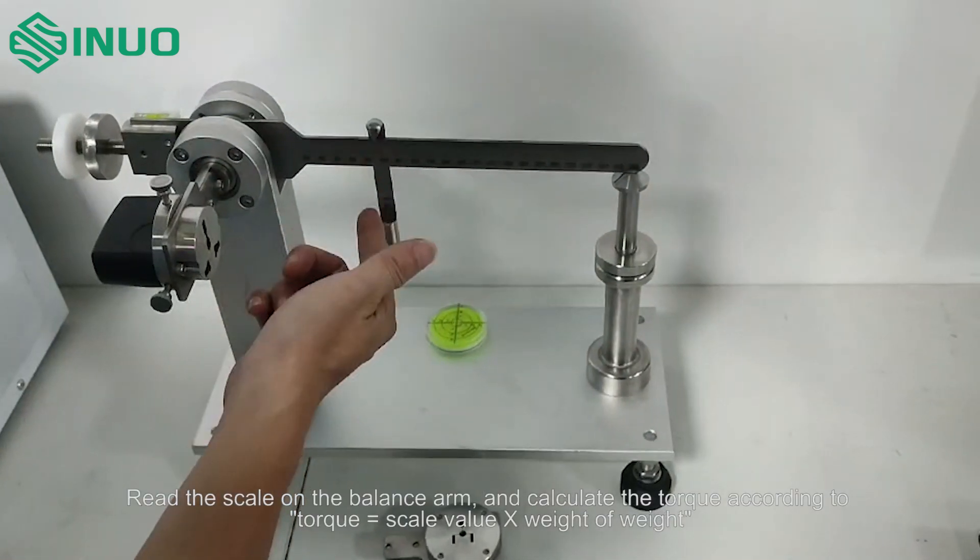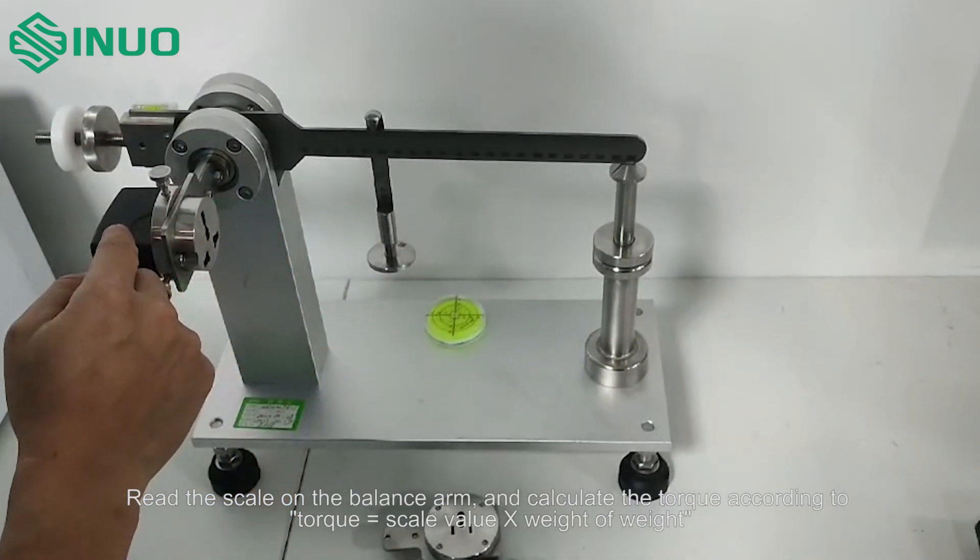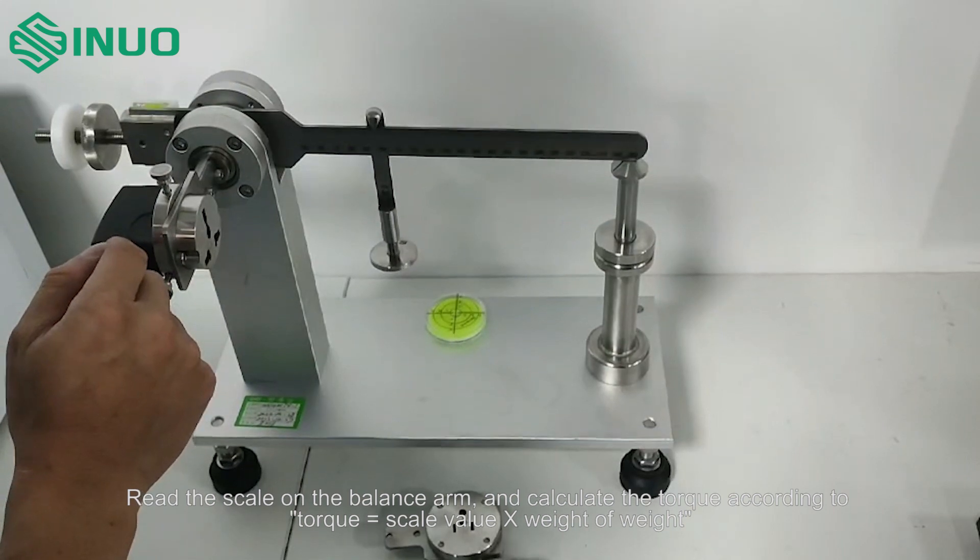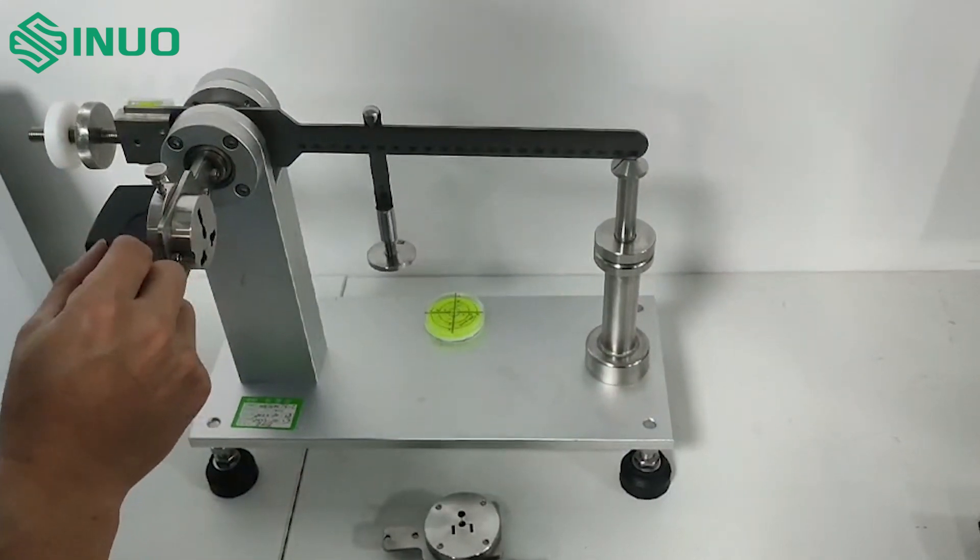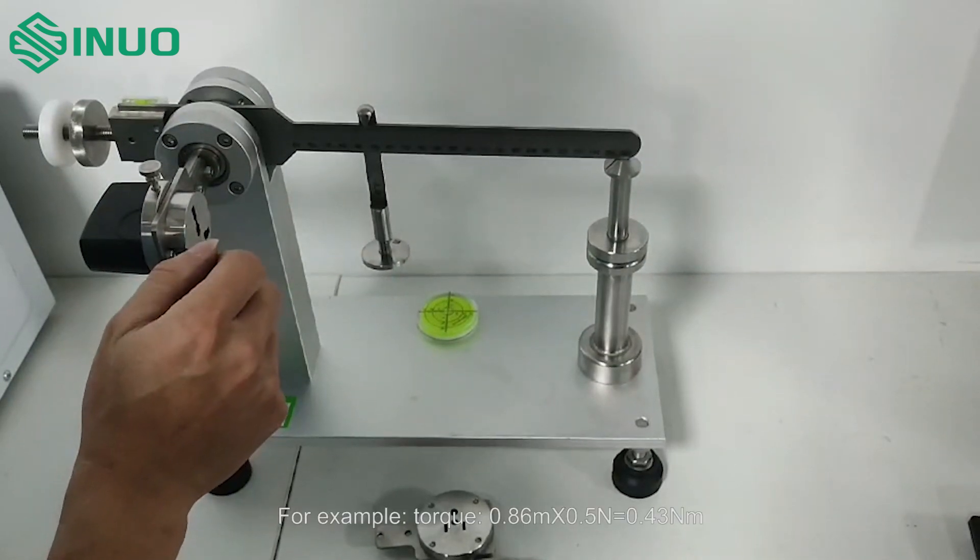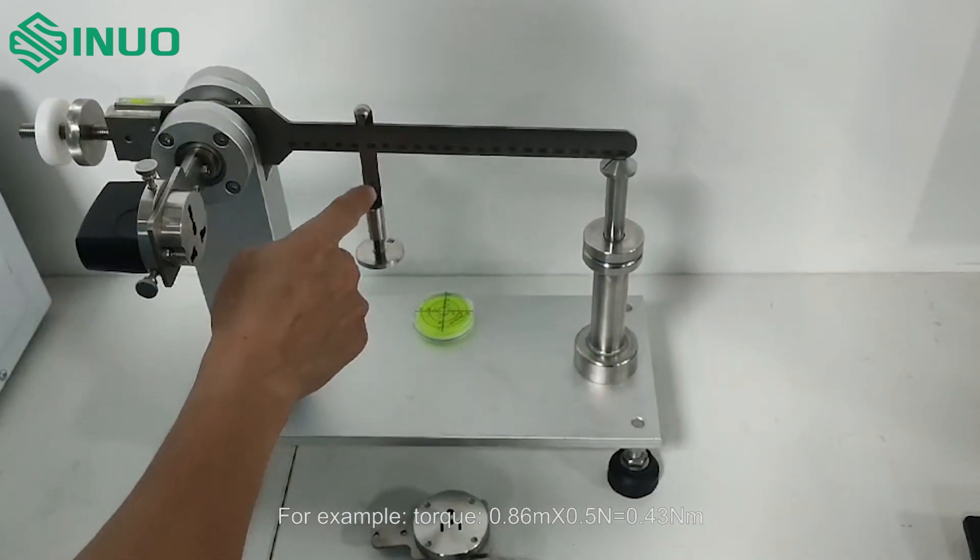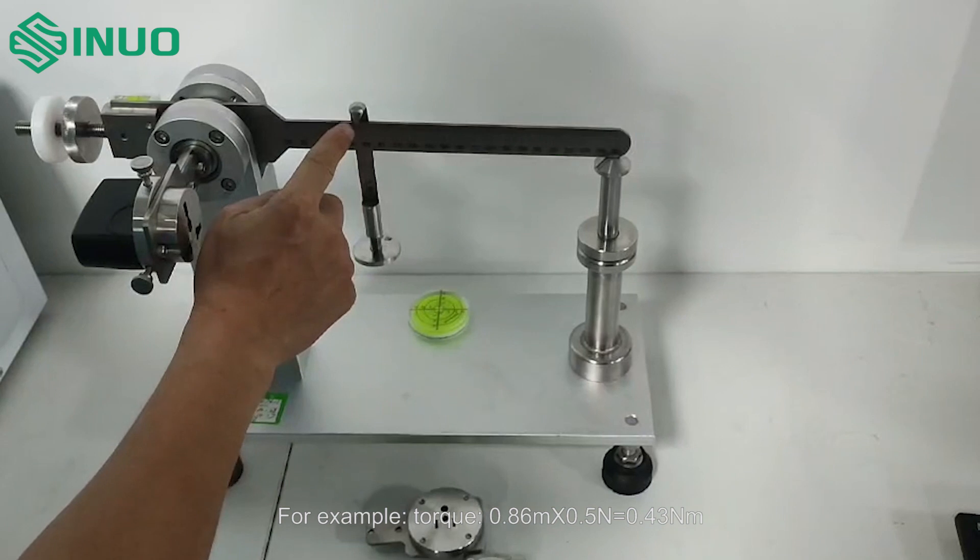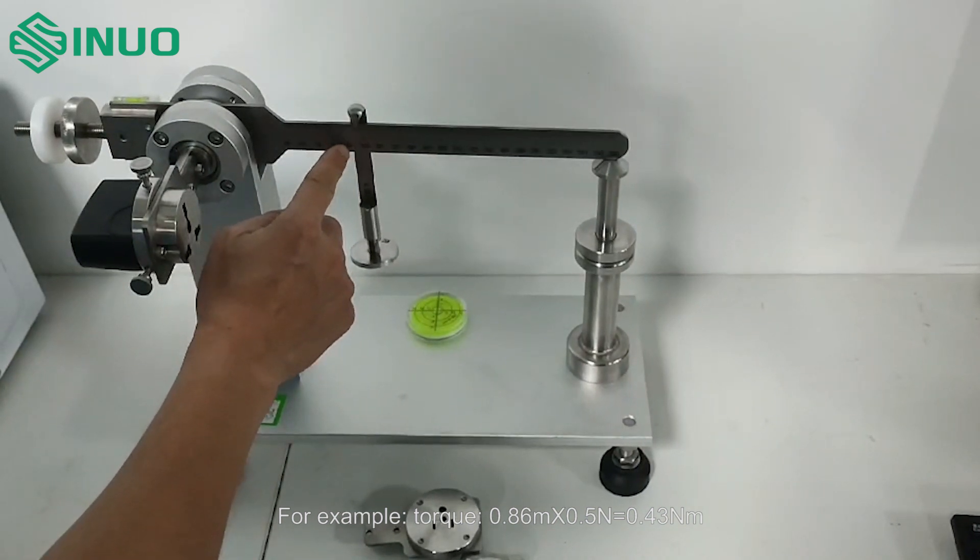Read the scale on the balance arm and calculate the torque according to: torque equals scale value times weight of weight. For example, torque equals 0.86 meter times 0.5 N, which equals 0.43 Nm.